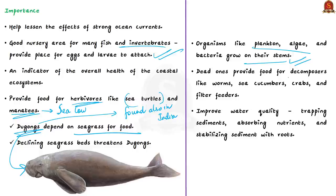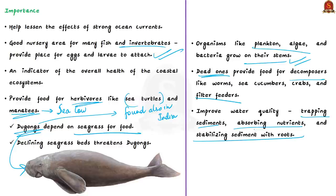Interestingly, seagrasses provide food not only when alive but also when dead. Dead seagrasses provide food for decomposers like worms, sea cucumbers, crabs, and filter feeders — animals that obtain food through filter feeding, which is a process where food particles or small organisms are randomly strained from water. Finally, seagrasses also improve water quality by trapping sediments, absorbing nutrients, and stabilizing sediment with their roots.